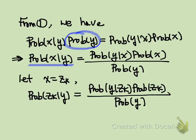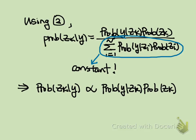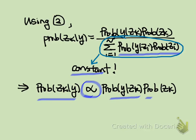This is Bayes' theorem. Instead of X, let's plug in Zk. Then probability of Zk given Y equals probability of Y given Zk times probability of Zk divided by probability of Y. We can replace the denominator using fact 2 as the summation of probability Y given Zi times probability of Zi. Since the denominator is just a constant, we can get rid of it and say that probability of Zk given Y is proportional to the numerator, which is probability of Y given Zk times probability of Zk.